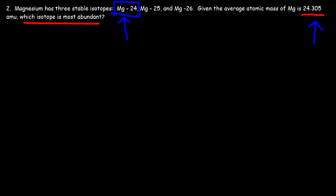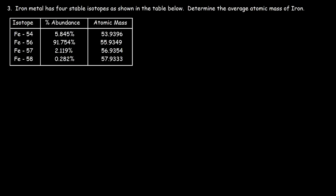And it's just as simple as that. The isotope whose mass is closest to the average is usually the one that's going to be the most abundant isotope. Now here we have a longer problem: iron metal has four stable isotopes as shown in the table below. Determine the average atomic mass of iron.